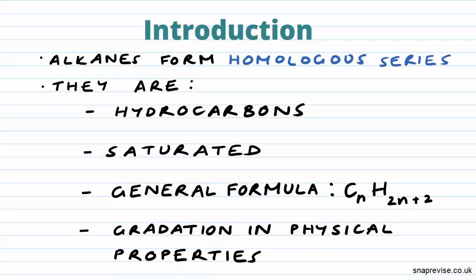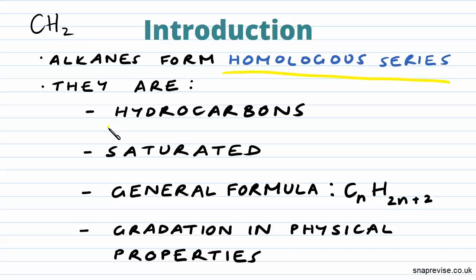We've looked at alkanes before and we discussed how they form a homologous series, meaning they form a family which share similar properties, and each member differs from each other by a unit of CH2. So our alkanes are hydrocarbons, meaning they're made of both hydrogen and carbon. They are saturated, meaning that they contain only single covalent bonds. They have a general formula of CnH2n+2, and they have a gradation in physical properties between their members, meaning that they follow a general trend.